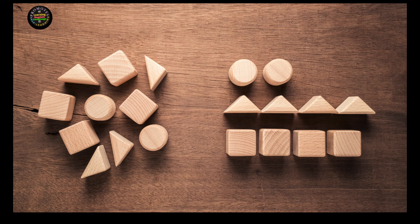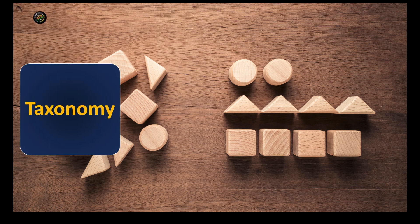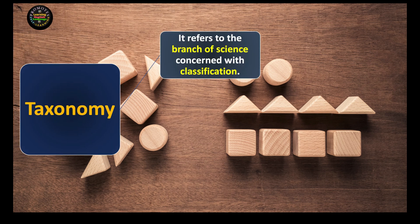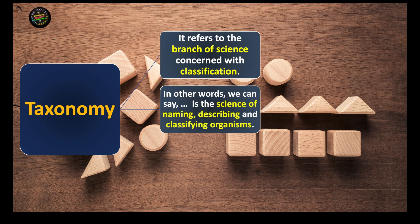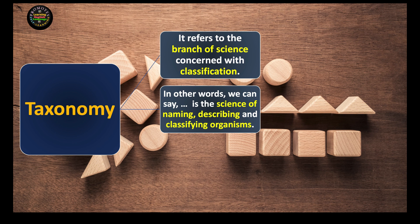Now let's move and understand the definition of the word taxonomy. It refers to the branch of science concerned with classification — to classify something, to put something into order, to arrange something. In other words, we can say taxonomy is the science of naming, describing, and classifying organisms. The word 'organisms' is very important here.